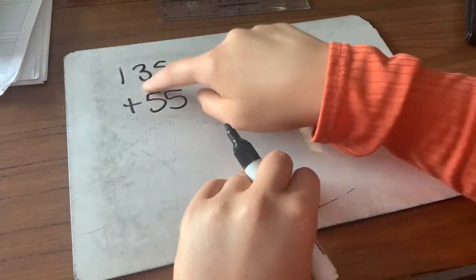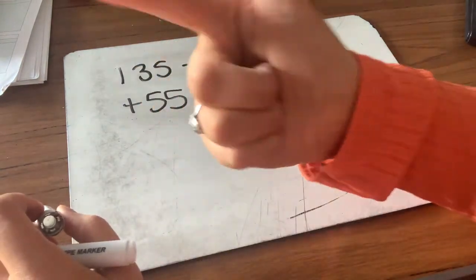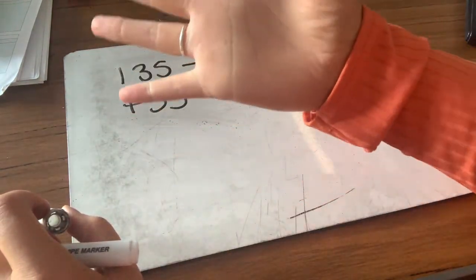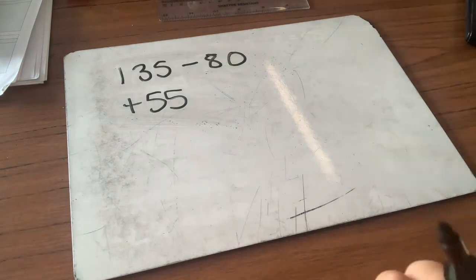Other way we could do it is count on from 8 10s to 13 10s. 9, 10, 11, 12, 13, 5 10s, and our five units would make 55.